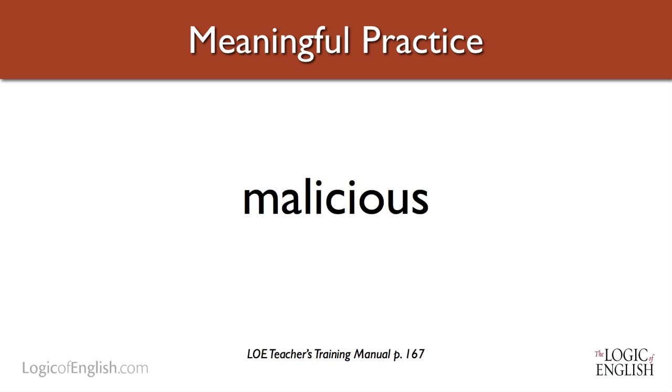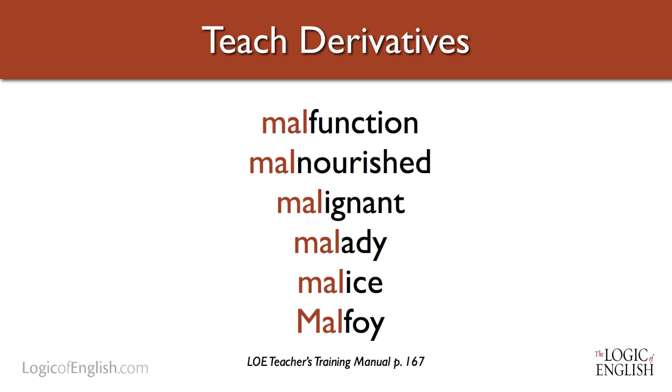In literature class, students come across the word 'malicious' and don't know what it means. They can think of other words with 'mal' — if something malfunctions, that's bad; if someone's malnourished, they're poorly nourished; if something is malignant, it's bad; or a malady, or malice. You can discover that 'mal' means bad. This also plays into Harry Potter — if you know anything about Malfoy, you'd have known he was bad at the beginning of book one if you simply knew how to look at roots. The Harry Potter series is full of roots and plays on words.